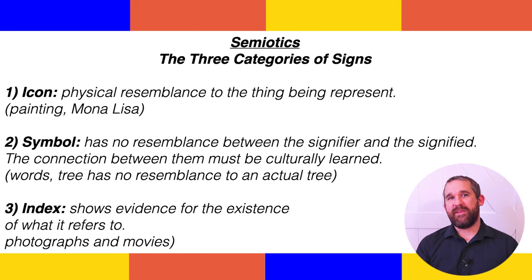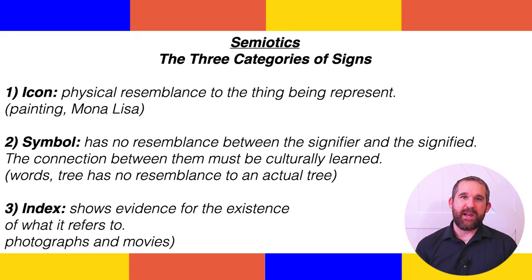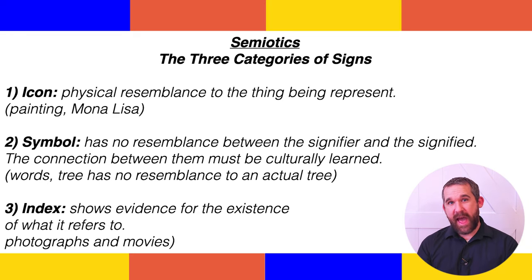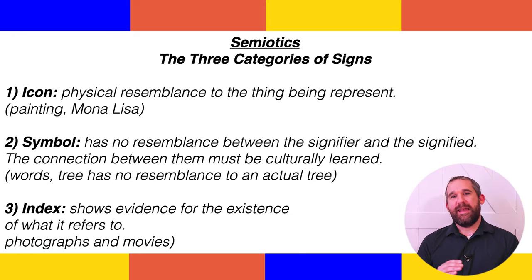Peirce's study of signs, called semiotics, had an RFT flair to it. Essentially there are three categories of signs that represent language and cognition, or more accurately reality in the way that we know and talk about reality. The three categories are icon, symbol, and index.